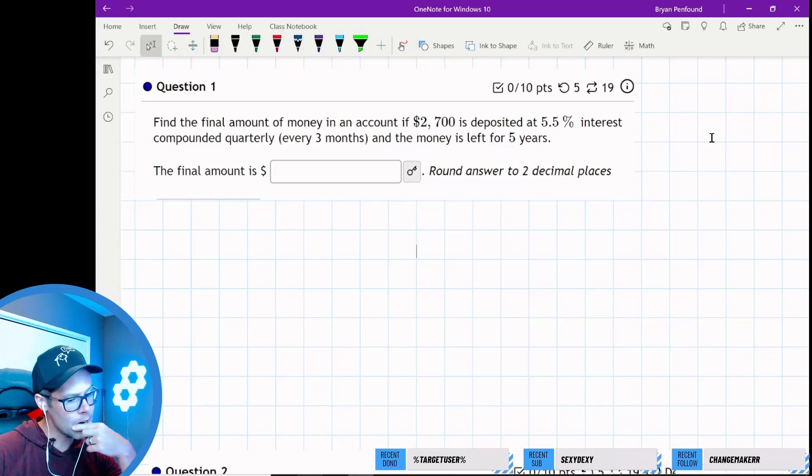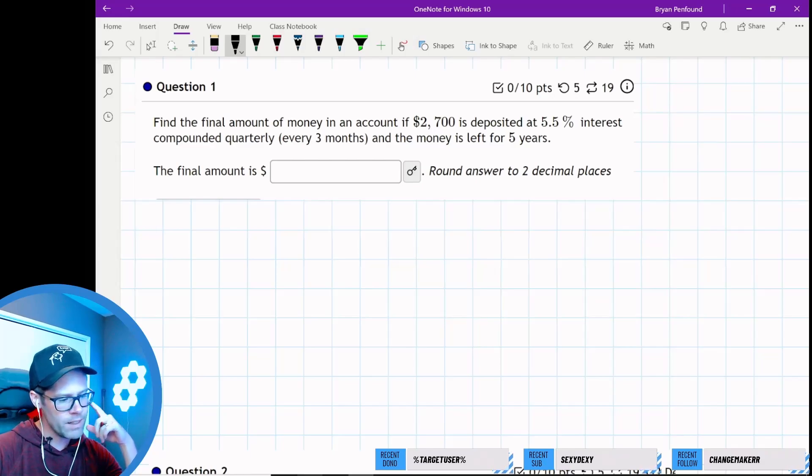It looks like there's compound interest as well. Find the final amount of money in an account if $2700 is deposited at 5.5% compounded quarterly, and the money is left for five years.